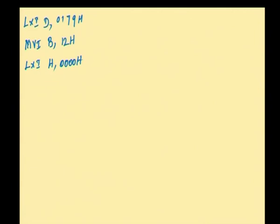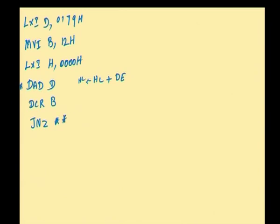LXI H, 0000H to clear the HL register pair. Then I use the DAD instruction: DAD D. The HL register pair content is added with the DE register pair, and the result is stored in the HL register. One addition is performed, then I have to decrement the B register. The process is continued till the B register reaches 0. If it has not reached 0, we continue the addition — the previous result is added with 0179H — until B reaches 0.